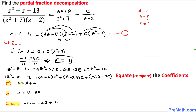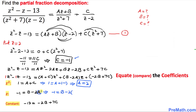From the equation 1 equals a plus c, and substituting c equals negative 1, we get a equals 2. Then substituting a equals 2 into negative 1 equals b minus 2a gives negative 1 equals b minus 4, so b equals 3.